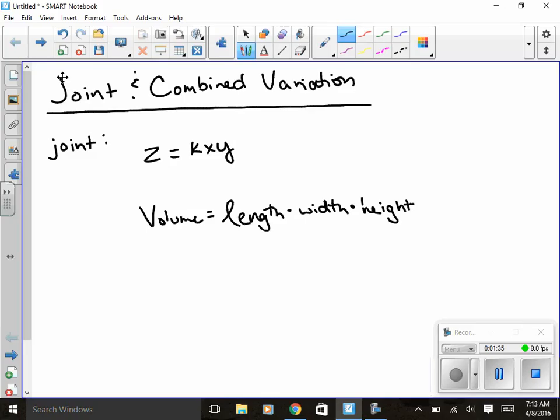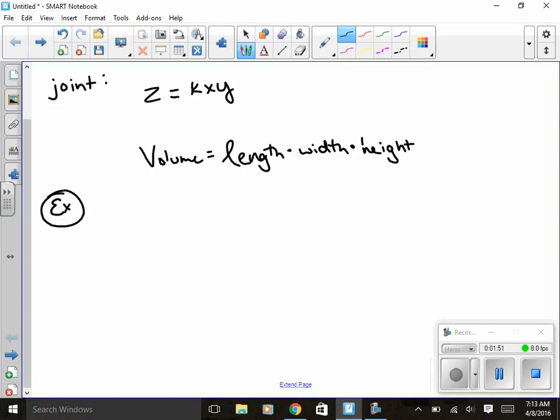So it's just using those different formulas in order to figure out what your equation is. To give you an example here, R varies directly as S and T. So one set of values, R equals 28, S equals 7, and T equals 8.